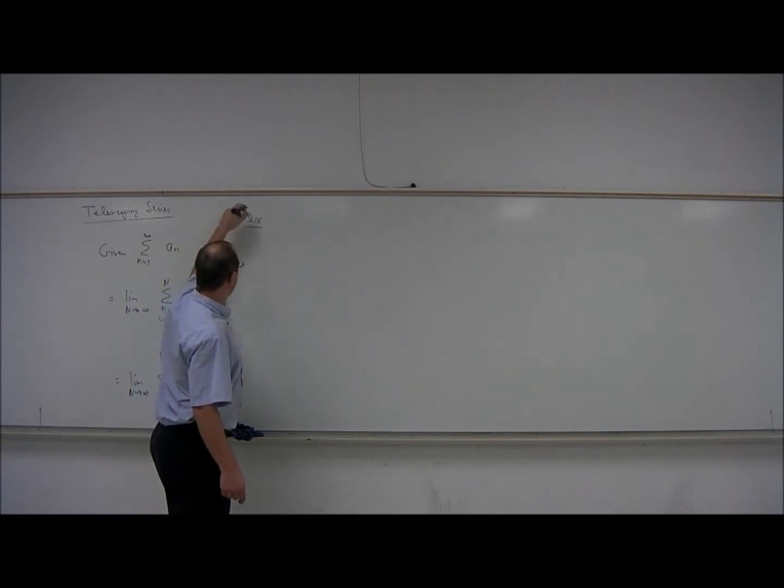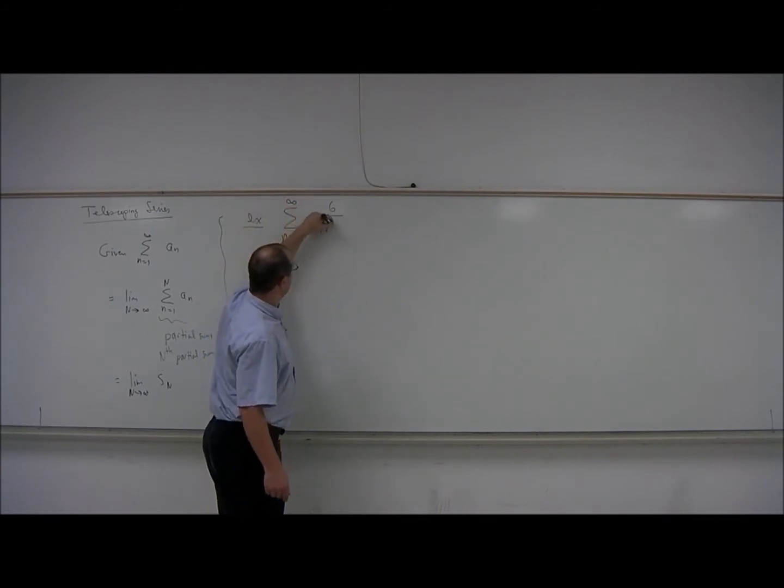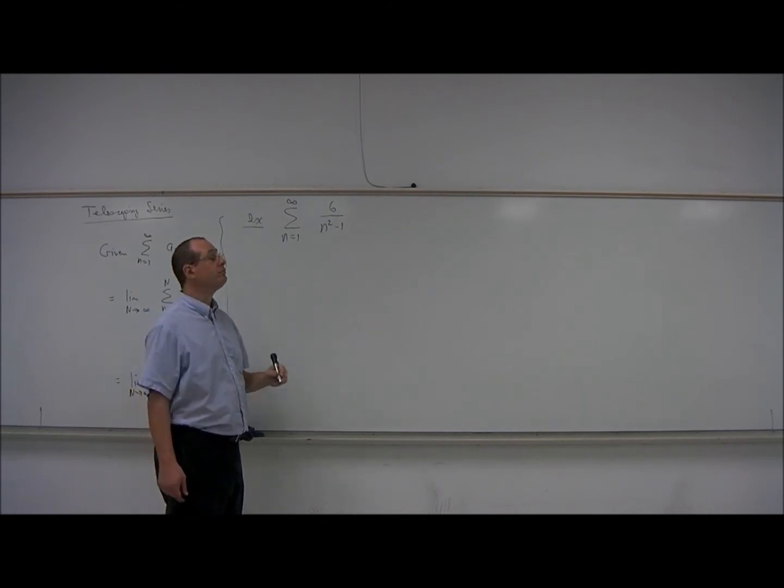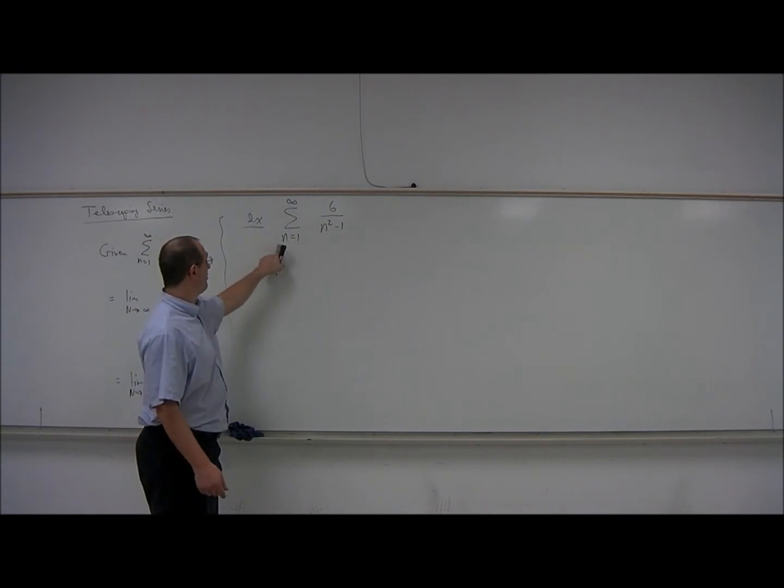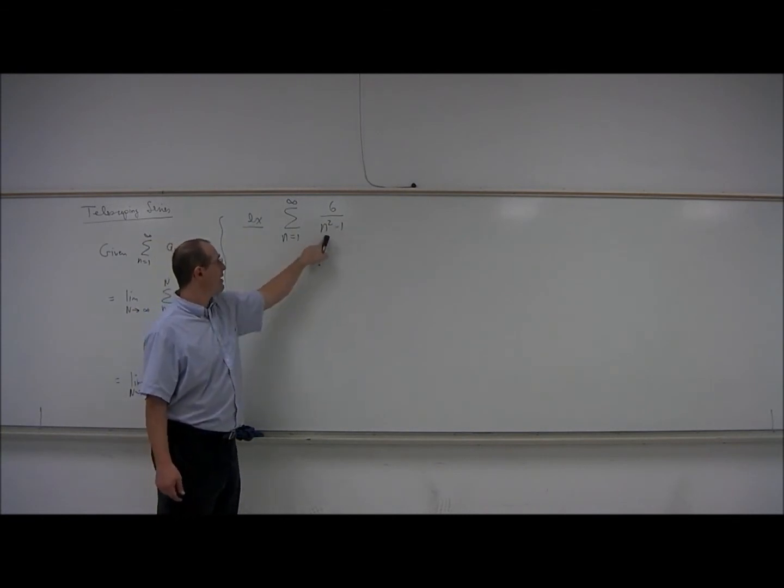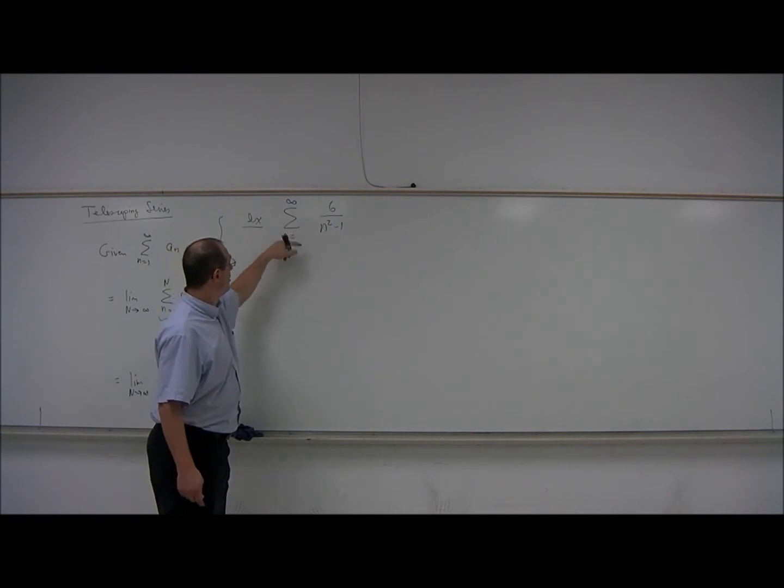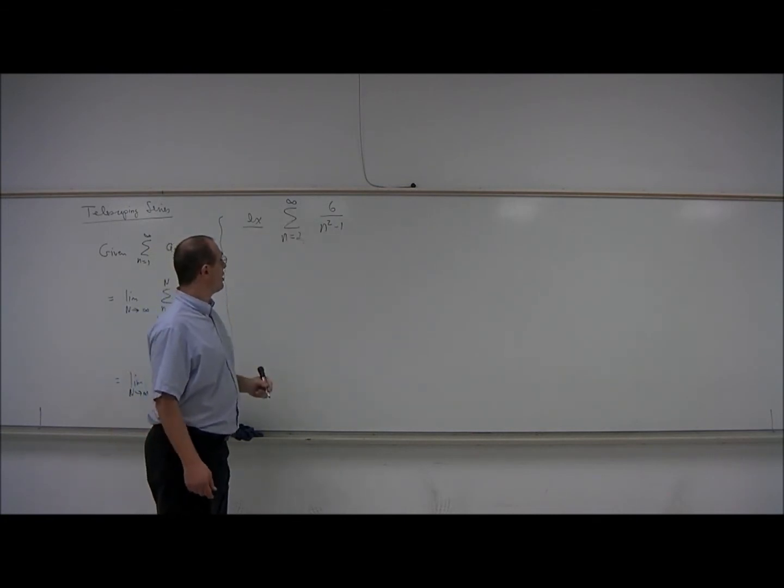So let's look at an example. Suppose we want the summation n equals 1 to infinity of 6 over n squared minus 1. I made a little bit of an error here just by having it starting at n equals 1. If n is 1, I have division by 0. That's unacceptable. So we should start at 2 or something bigger than 1. So let's start at 2. 6 over n squared minus 1.